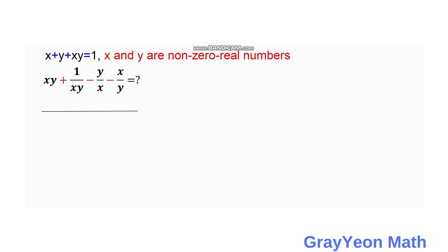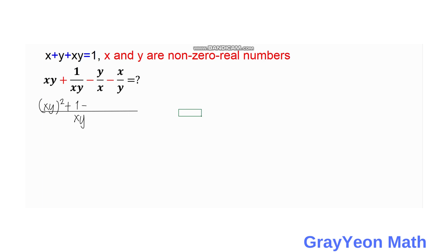The first thing we need to do is simplify the given equation. On the denominator we have xy, and xy divided by 1 times xy gives us: xy squared plus xy divided by xy equals 1, then xy divided by x times y becomes y squared, minus xy divided by y equals x, and this becomes x squared.